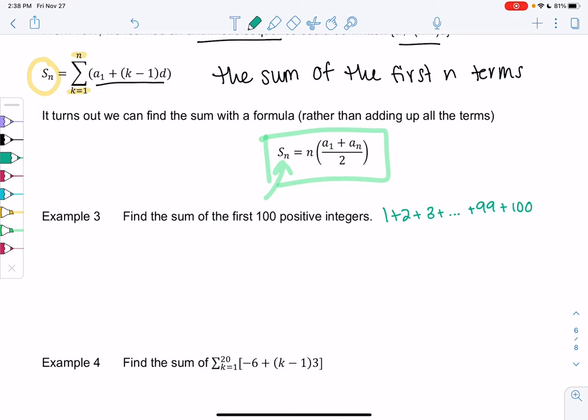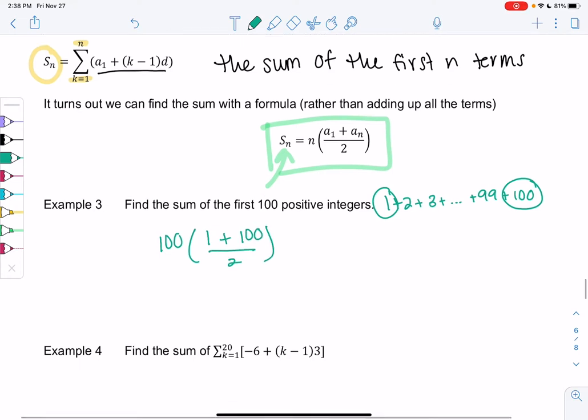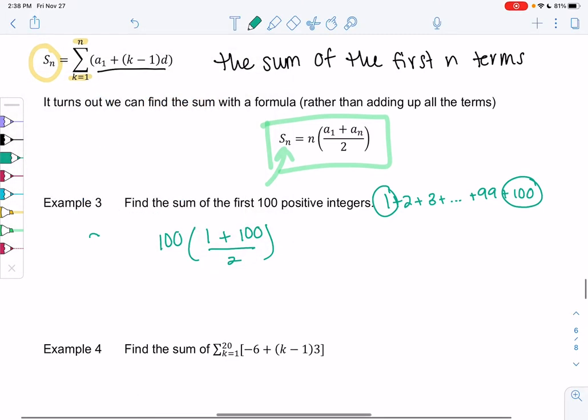My S sub n will be 100 for n times my first term, which is 1, plus my last term, which is 100, all over 2. And we call that S100 for the first 100 terms. So it's a nice shortcut. We don't have to find all the terms and add them up.